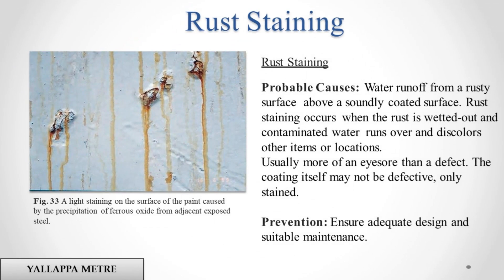Rust Staining. Probable causes: water runoff from a rusty surface above a soundly coated surface. Rust staining occurs when the rust is wetted out and contaminated water runs over and discolors other items or locations. Usually more of an eyesore than a defect — the coating itself may not be defective, only stained. Prevention: ensure adequate design and suitable maintenance.